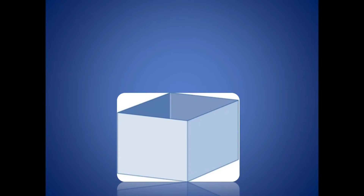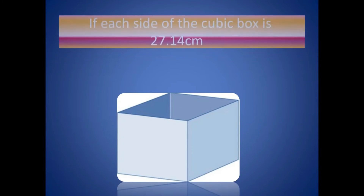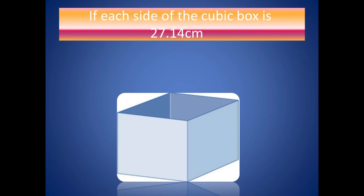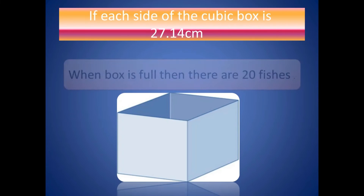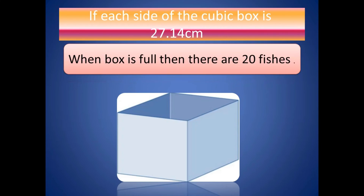This cubic box is empty and the length, width and height is 27.14 cm. When this box is full then there are 20 fishes.